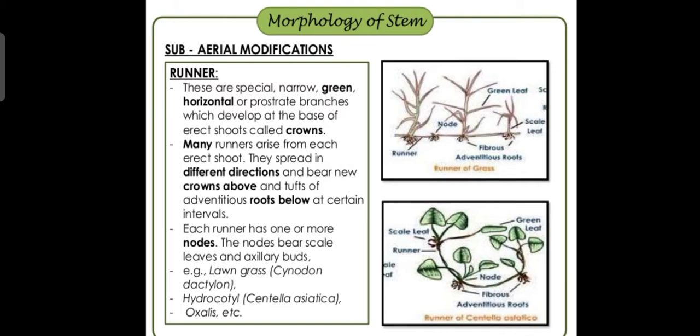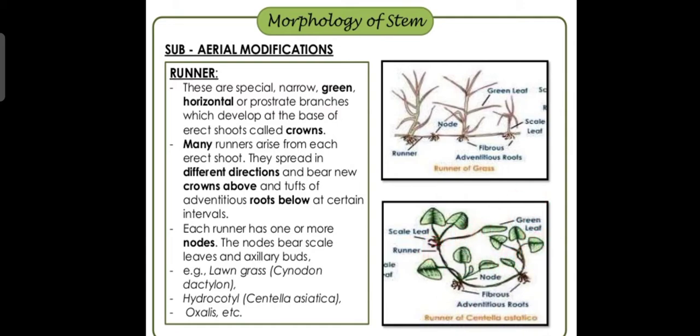An example of runners is lawn grass, scientifically called Cynodon dactylon — the green grass used in lawns. Another example is Centella asiatica (also called Hydrocotyle), which is a hypotensive drug used in hypertension. In Centella asiatica, roots form at particular intervals with scaly leaves — these are the runners. It grows horizontally, forming a shoot system above and a root system below.